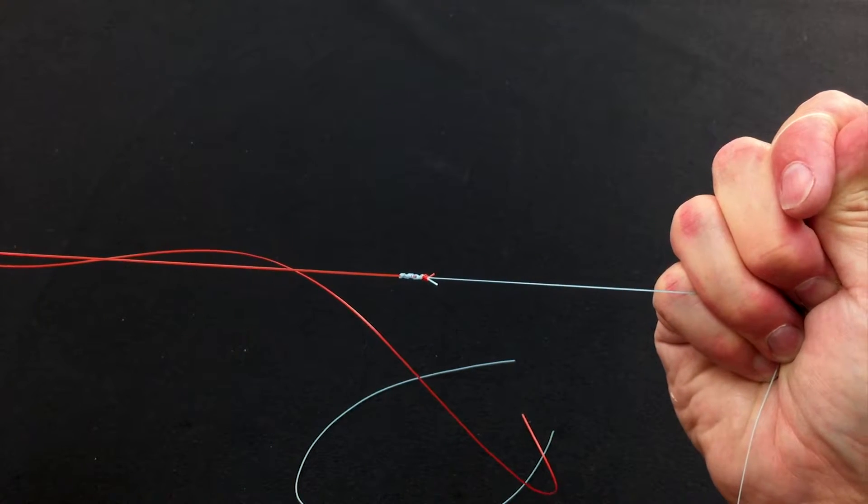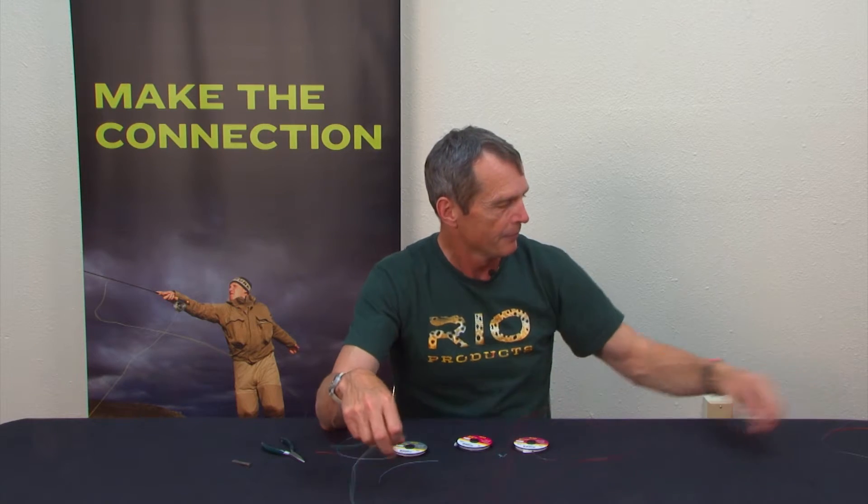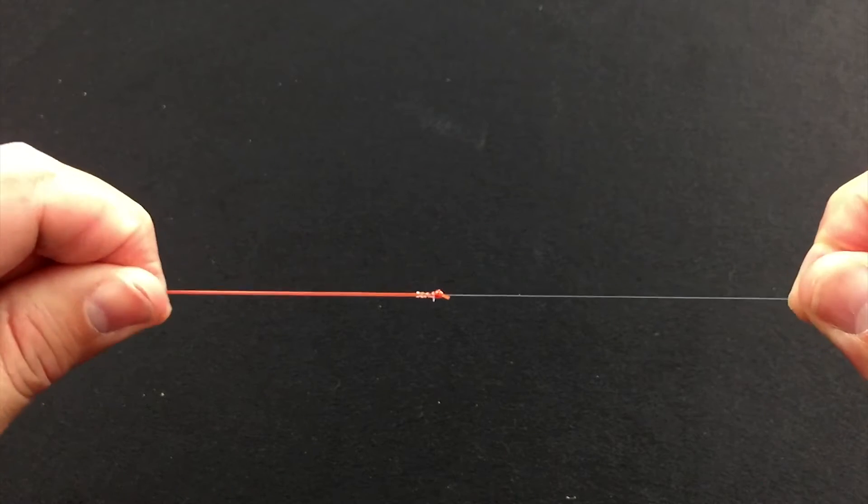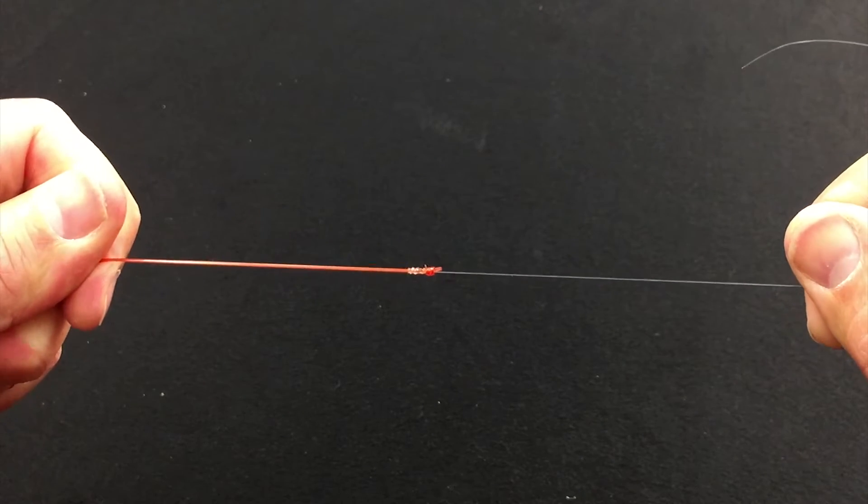So that's what it looks like in the thick material. This is what it looks like when you tie some thin 10-pound material in this case to the thick stuff. It's a very strong, very easy to tie knot. And that, that's the Slim Beauty.